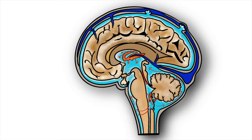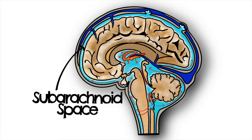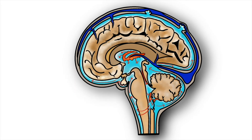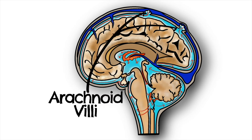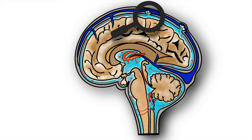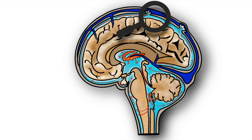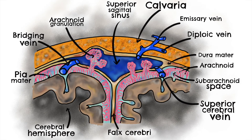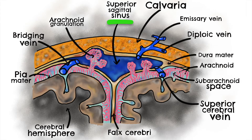It then circulates around the brain and spinal cord in this subarachnoid space. Finally, the CSF exits the subarachnoid space through the arachnoid granulations or arachnoid villi. These arachnoid granulations are outpouchings of the arachnoid mater into the dural venous sinuses. The largest of these granulations are found lying along the superior sagittal sinus, which can be seen demonstrated in the diagram here, but they are also present in the other dural sinuses.